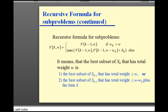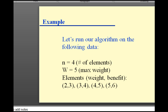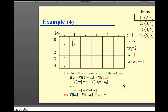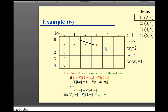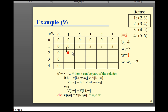Let's look at another example. The items have weights 2, 3, 4, 5 kg and benefits 3, 4, 5, 6. We first initialize all zero columns and zero rows to zero. The first item starts from 2 kg, so for 1 kg the benefit is 0, for 2 kg it's 3, and for 3, 4, 5 kg it remains 3 since we're still on the first item. For the second item, we can consider the first two items together, so at 2 kg it's 3.